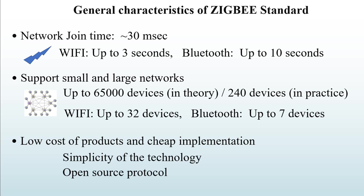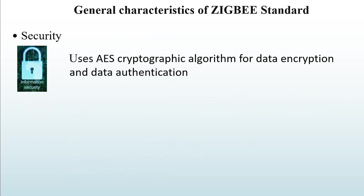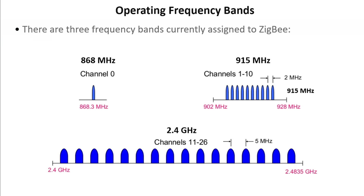Security: Zigbee networks use the AES algorithm for data encryption and authentication — the same standard used by banks for online operations and government agencies, making it one of the most robust cryptographic algorithms available. Regarding frequency spectrum, there are three bands assigned to Zigbee. The first is 868 MHz with only one channel, allocated in Europe.